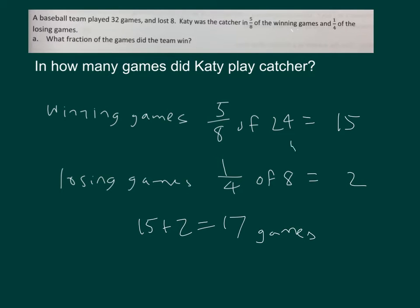Let me show you 5/8 of 24. Cancel: the 24 becomes a 3, 8 becomes 1, and 5 times 3 is 15.